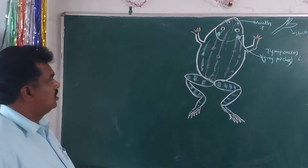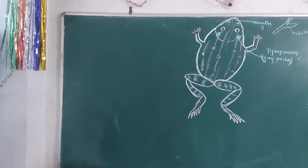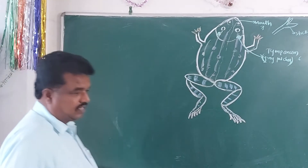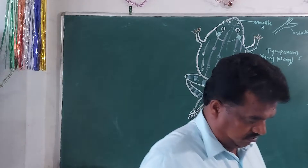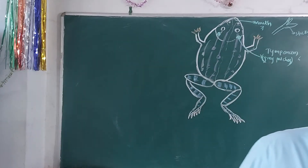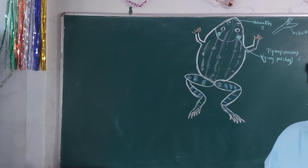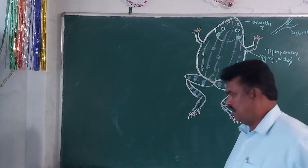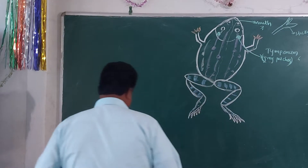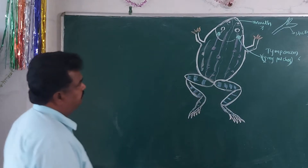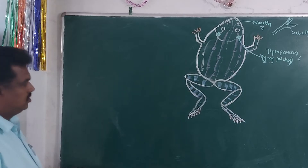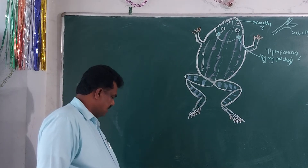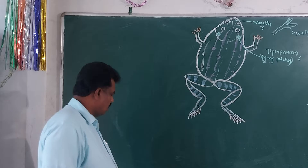Tetrapods mainly consists of four classes: Class Amphibia, Class Reptilia, Class Aves, and Class Mammalia. So let us see the first one — Amphibians, Class Amphibia.